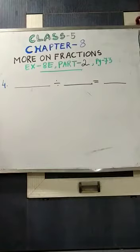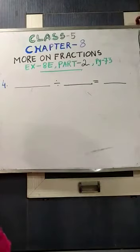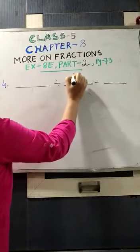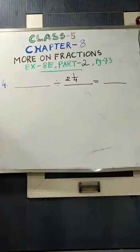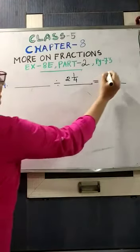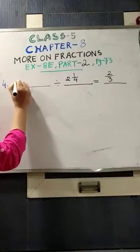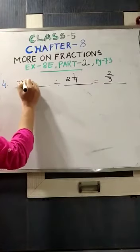The formula should be divided by 2 whole 1 by 4. That means divisor is given to get 2 by 3. That means quotient is also given. What is not given? That is dividend.